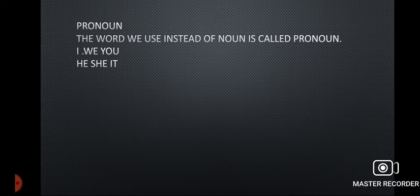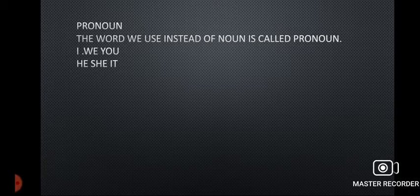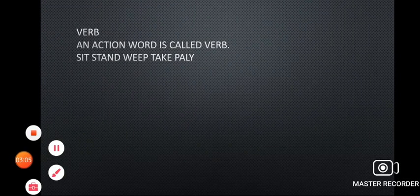یعنی noun کی جگہ پہ ہم جو word use کرتے ہیں اسے pronoun کہتے ہیں۔ For example: I, we, you, he, she, it, they. There are many kinds of pronoun — personal pronoun, reflexive, indefinite, possessive — جو کہ ہم آنے والے lectures میں discuss کریں گے۔ For example: 'Horse is a faithful animal. It runs fast. It eats grass.' یہاں horse ایک noun ہے اور it اس کا pronoun ہے۔